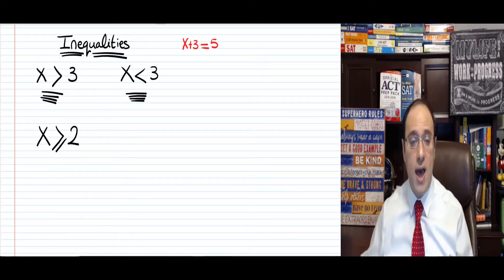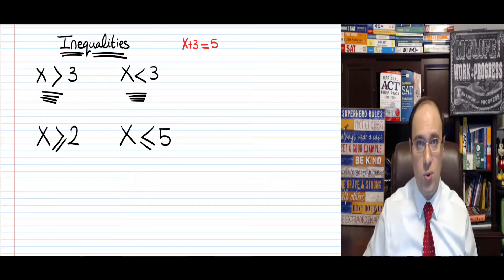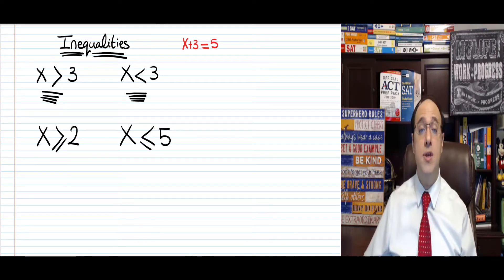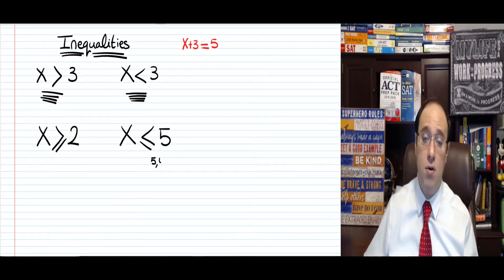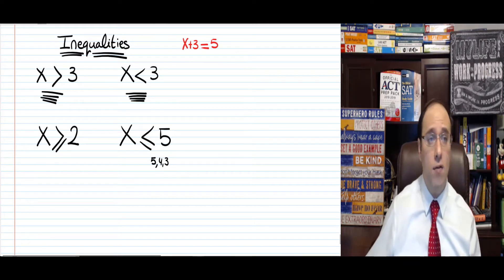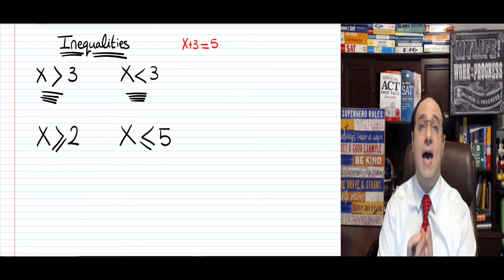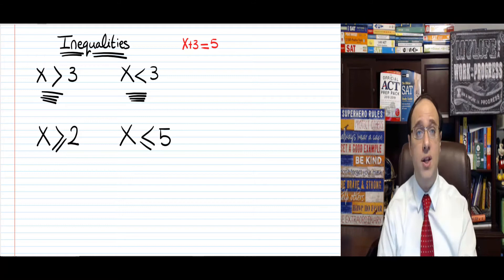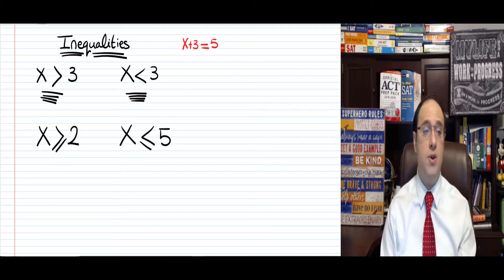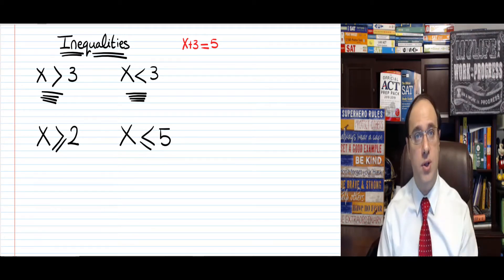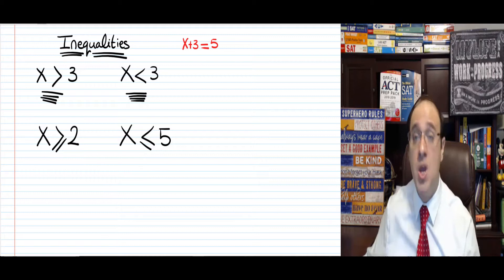We can also have a fourth sign, which means x is less than or equal to 5. This means x can equal 5 or be less than 5, so it can be 5, 4, 3, and so on — and of course we can have decimals and other numbers. So to summarize: x greater than a number means bigger than it; x less than a number means smaller; x greater than or equal means equal or more; x less than or equal means equal or less.